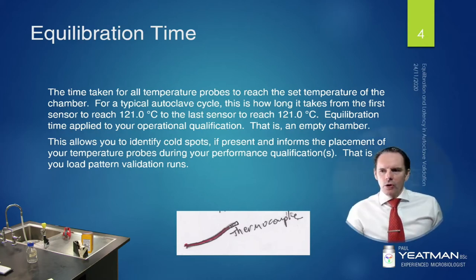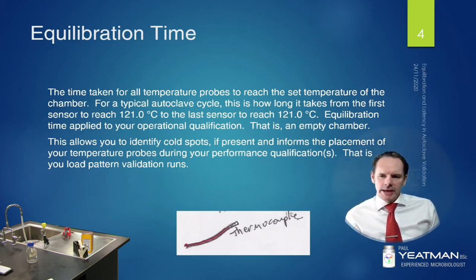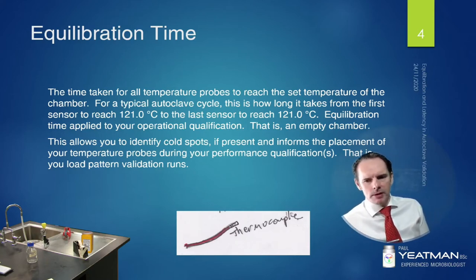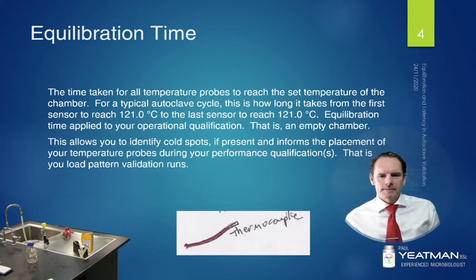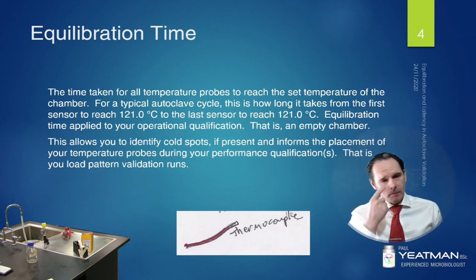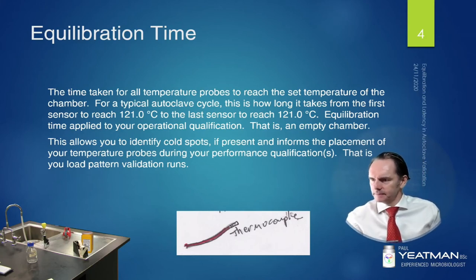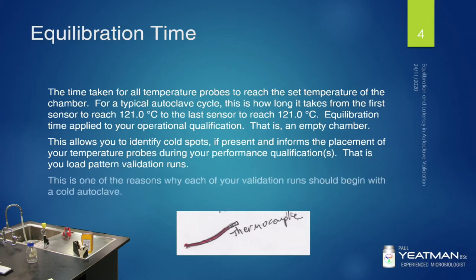By starting your validation cycle with a cold autoclave, the amount of energy needed to heat the chamber is increased — that's part of the thermal load we'll be discussing. This translates into a longer time for your temperature probes to heat up to the required temperature. By determining your equilibration time you'll also be able to identify your cold spots. As part of your PQ, if you do find cold spots, place more probes around the area for more valuable data. This is one of the reasons why each validation run should begin with a cold autoclave — cold autoclave means more energy required to reach the required temperature, so effectively worst case.